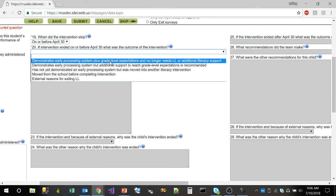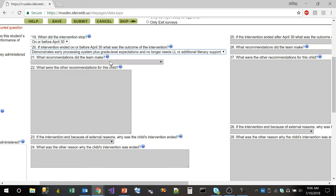teachers will be required to answer question 20, which is a question about the outcome of the intervention. If, for example, they select the first one here, which is the child does not need any more literacy lessons support, they actually don't have to answer 21 through 24.